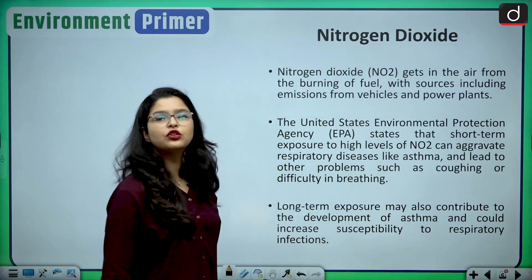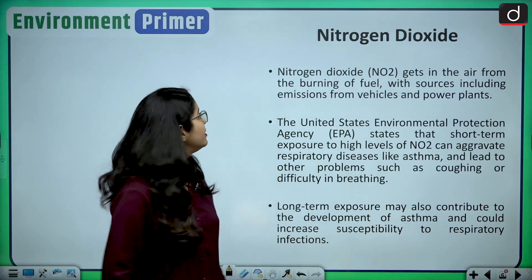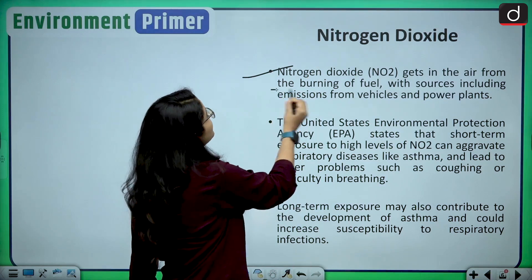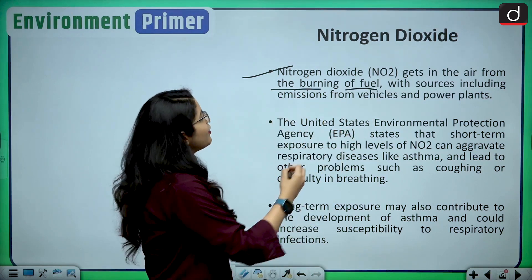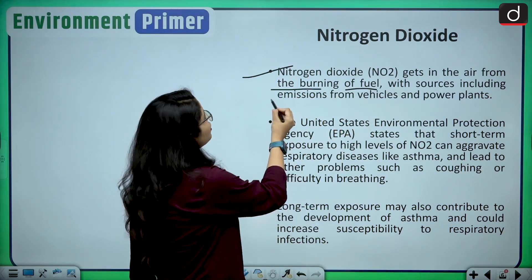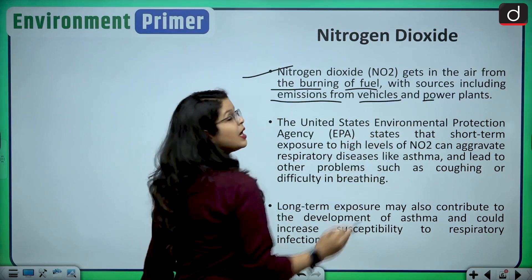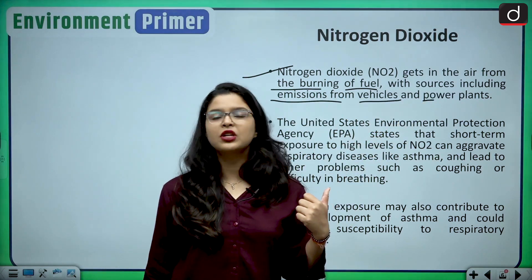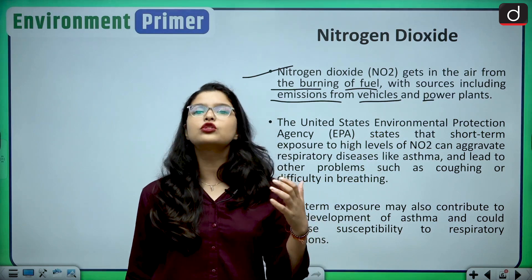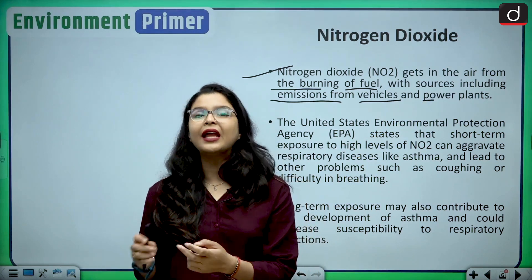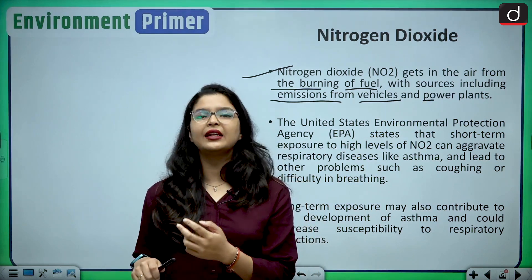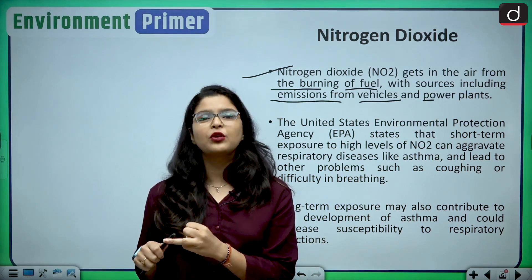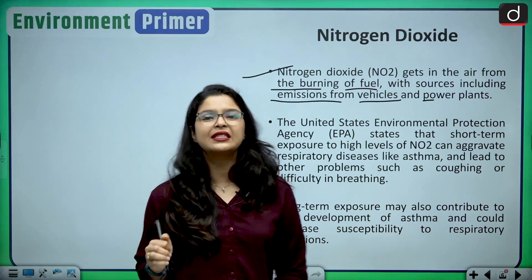The next pollutant is nitrogen dioxide. Nitrogen dioxide gets into the air from the burning of fossil fuels, with sources including emissions from vehicles and power plants. Nitrogen dioxide is a very common air pollutant generated by burning fossil fuels and vehicular emissions.